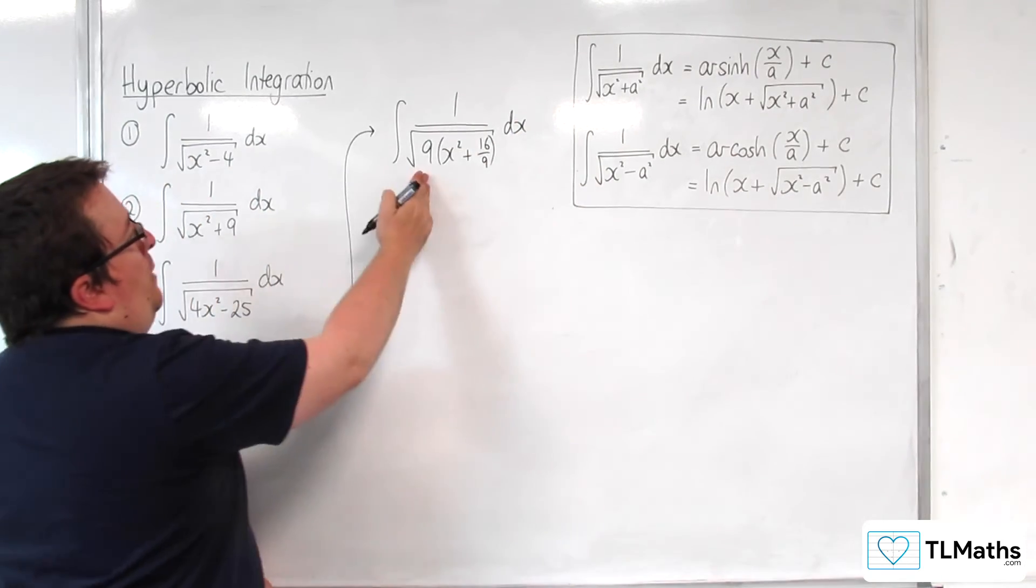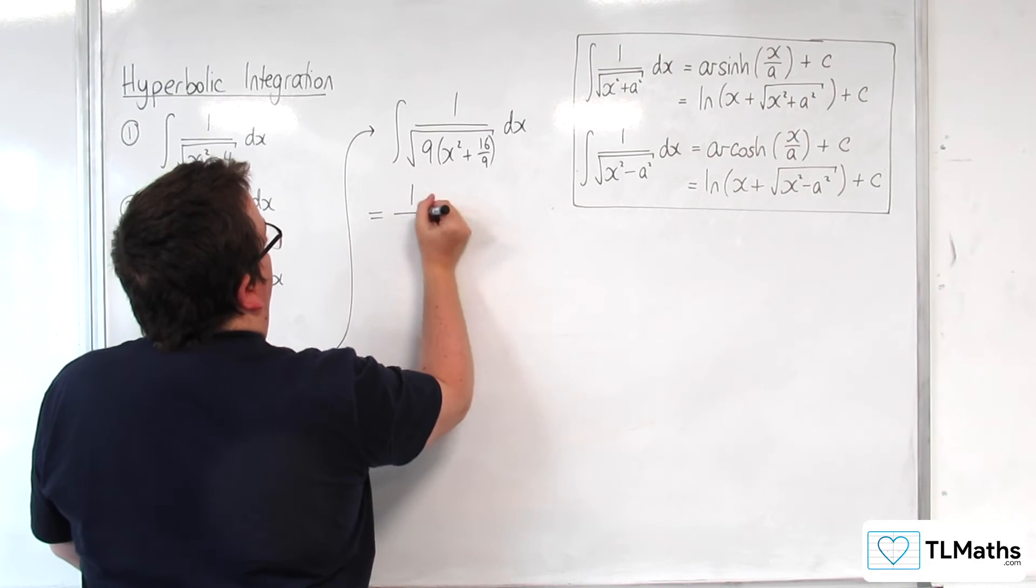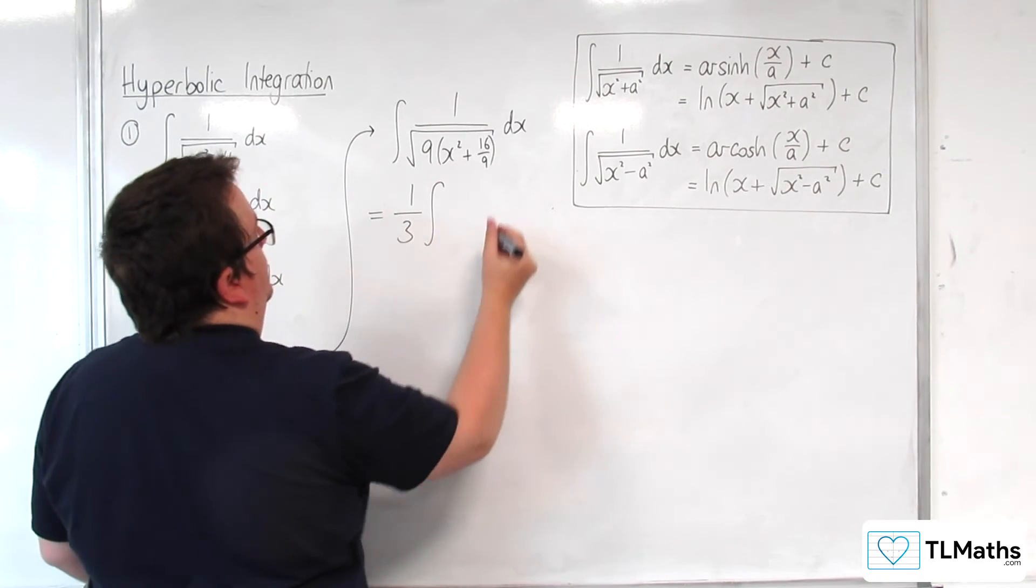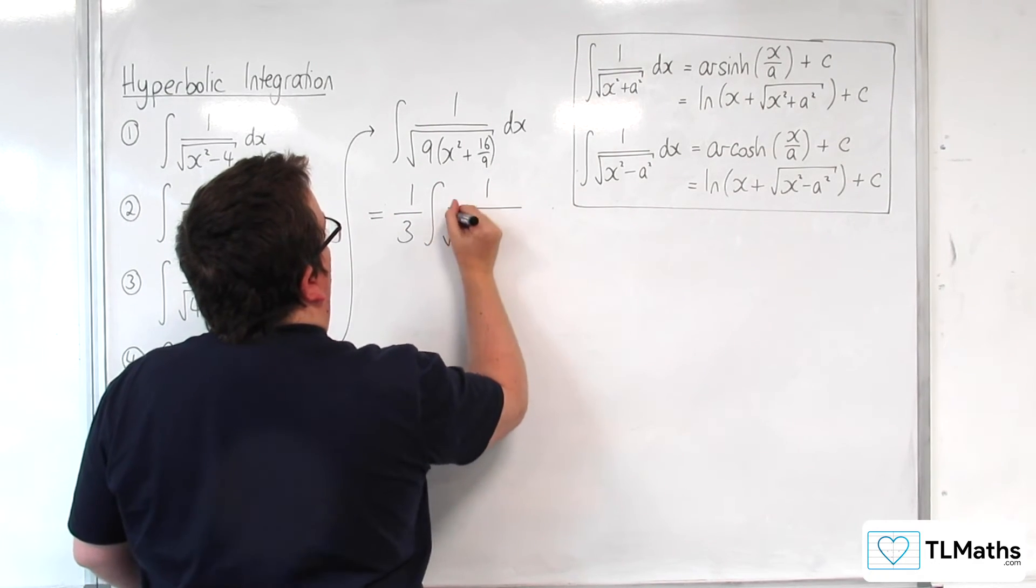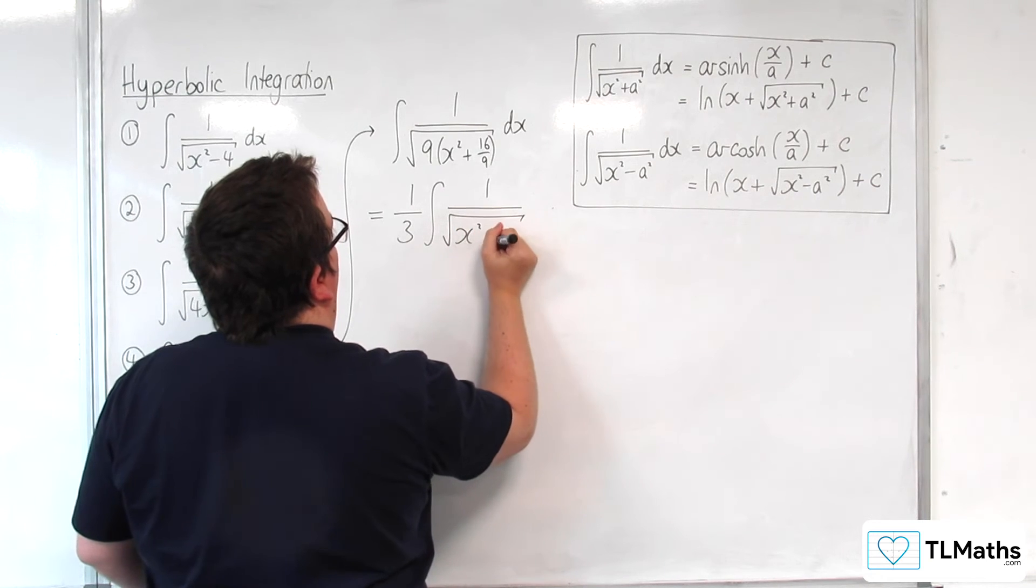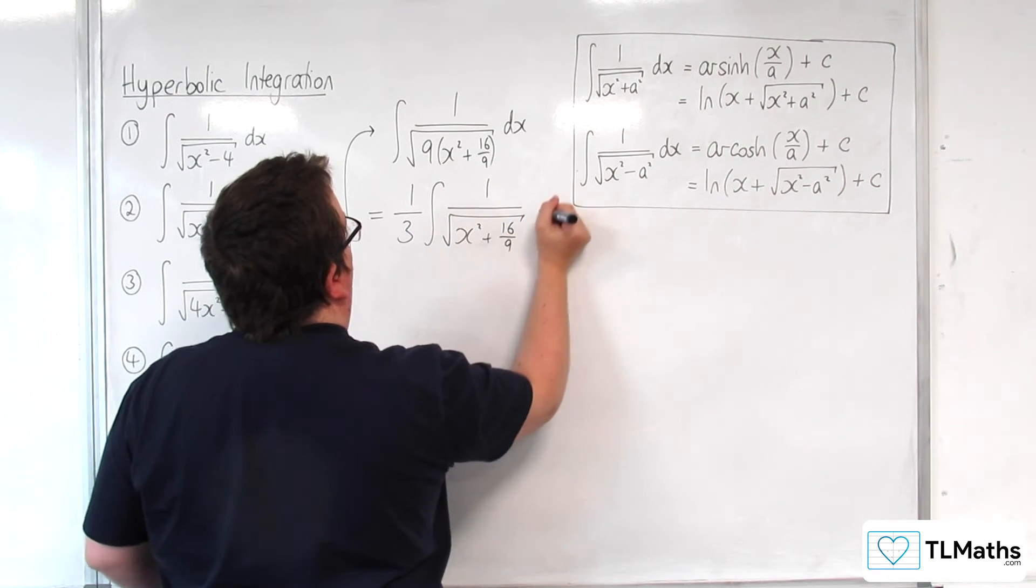So then the square root of 9 is 3, so I can factor 1 third out of the integral. And I'll have 1 over the square root of x squared plus 16 ninths dx.